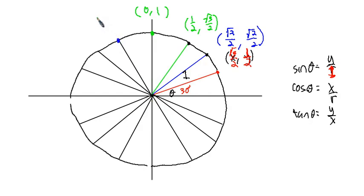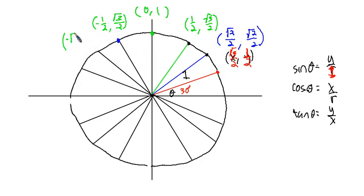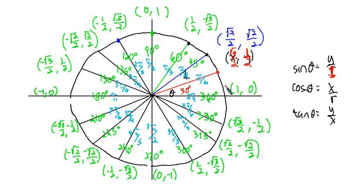Coming over here, we can see that this would also have a sine of root 3 over 2, but its cosine would be negative 1 half. This one here would have a cosine of negative root 2 over 2 and a sine of positive root 2 over 2. And here we have a cosine of negative root 3 over 2 and a sine of 1 half. Then we can completely fill this in and we have the unit circle.